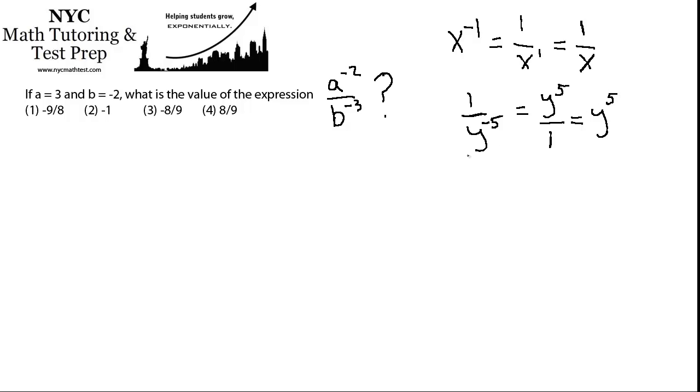So basically what's going to happen in this problem is that the a term in the numerator, because it has a negative exponent, is going to get sent to the denominator. And the b term, because it has a negative exponent, is going to get sent to the numerator.